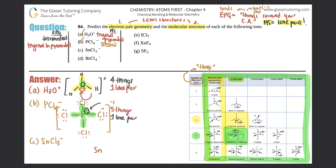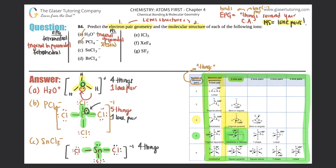Part (c): SnCl3-. The Lewis structure has tin in the middle surrounded by three chlorines, each with three lone pairs for the octet. There is one lone pair on tin, with a negative charge so we bracket it. The central atom tin has three bonds and one lone pair — four total things — so the electron pair geometry is tetrahedral. With one lone pair, the molecular structure is trigonal pyramidal.